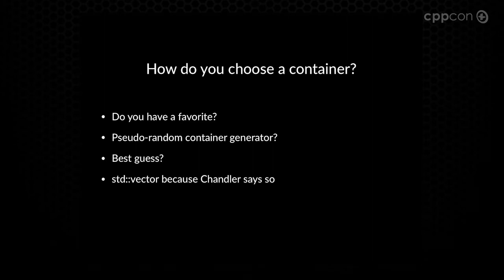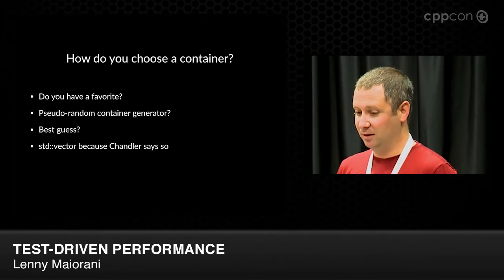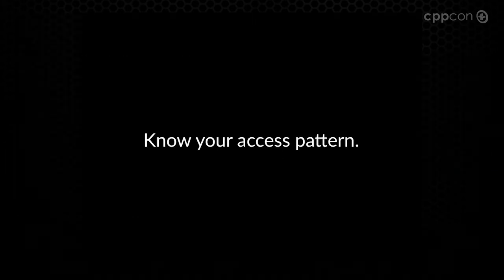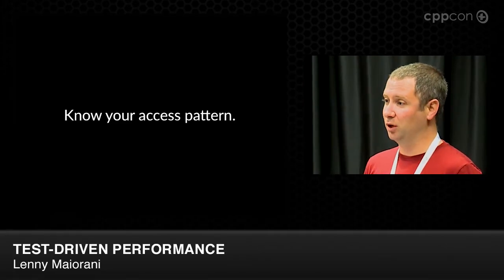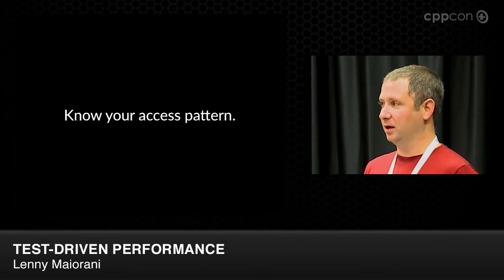So how do you choose a container? There are lots of options out there. People have their favorites. Maybe you have a pseudo-random container generator, or maybe you just listen to what Chandler says and always grab vector. I advocate knowing your access pattern. Your access pattern includes your memory allocation pattern as well as what you're going to be doing with the container once you put stuff into it. This is important because the different containers have very different ways of allocating memory and storing things, and under certain circumstances it is going to affect your performance.